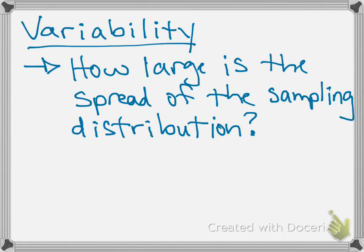Variability is going to be related to the standard deviation. The variability of a sampling distribution simply measures how large the spread of the sampling distribution happens to be. The larger the size of your sample, the smaller your variability should be.